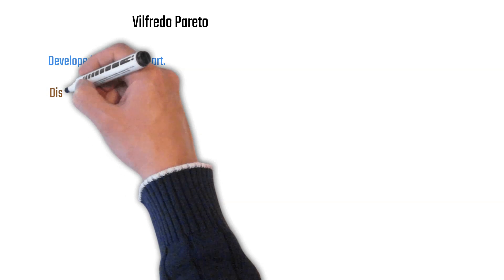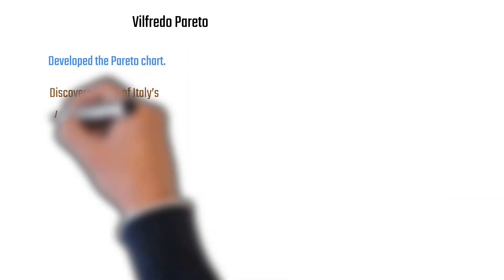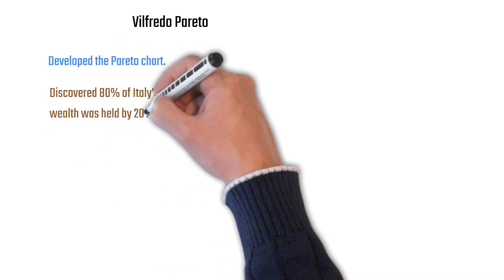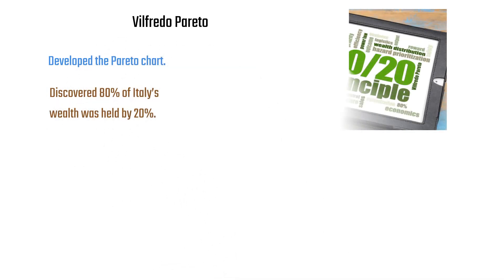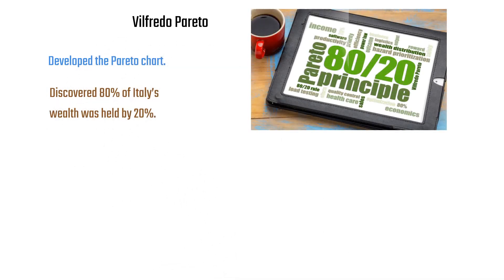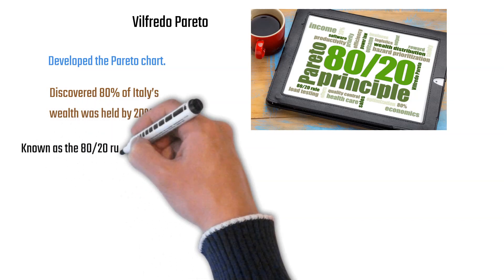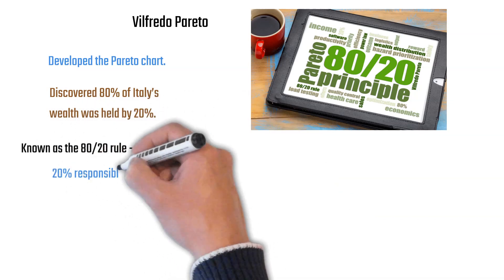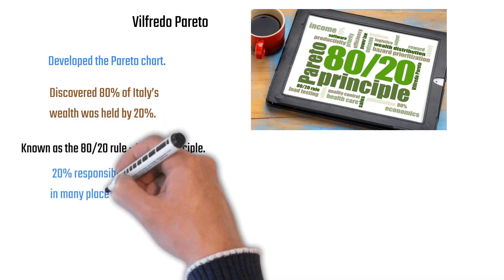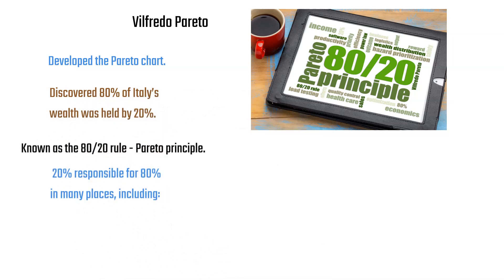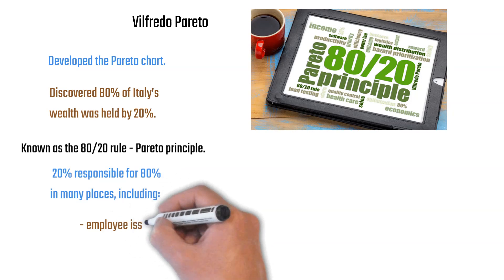He developed the Pareto principle, discovering that 80% of Italy's wealth was held by 20% of the people. This became known as the 80-20 rule or the Pareto principle, and it holds true in many situations.